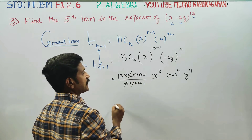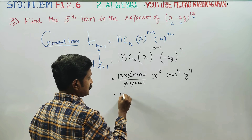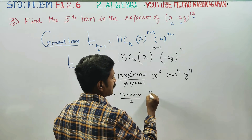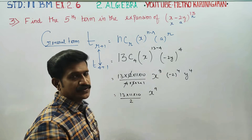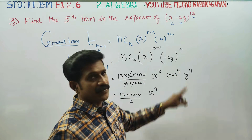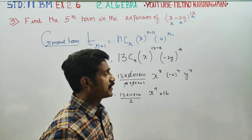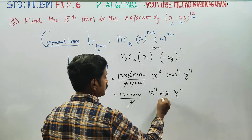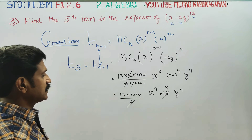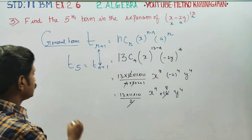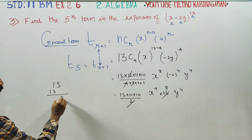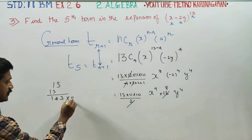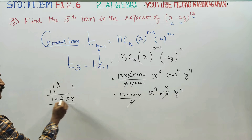We cancel: 12 and 4×3 cancel to give 1, leaving 13 × 11 × 10. Then (minus 2)^4 becomes positive 16, since even power makes it plus. Cancelling further: 10 divided by 2 gives 5... wait, we get 8 times. So 13 × 11 = 143, then 143 × 8. Computing: 8×3=24, carry 2; 8×4=32+3=35, carry 3; giving 1144.